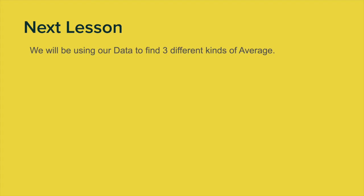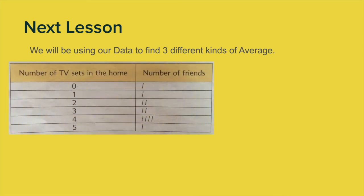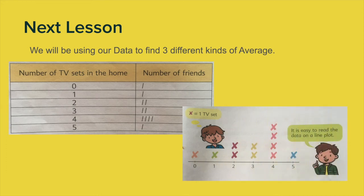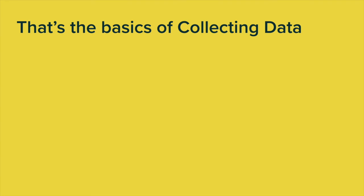In the next lesson we'll be using our data to find three different kinds of average, using the tally chart and the line plot. I'm not going to go into that right now, but I just want it in your minds because it's very important. We call it the three M's — maybe you've done it before. And that's the basics of collecting data.